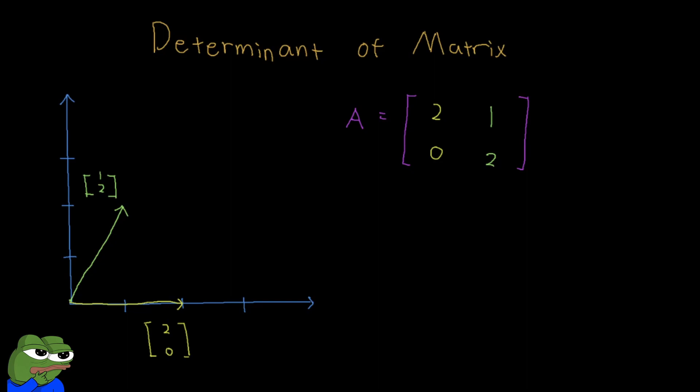Let's talk about the determinant of a matrix. But first, what is determinant? How can you visualize what determinant actually is in terms of matrices?